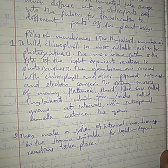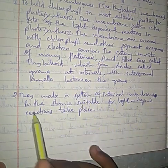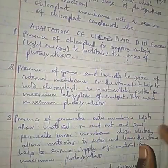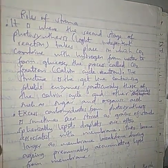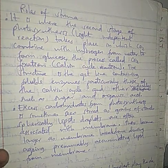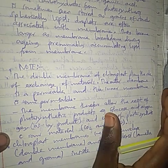Thylakoid membranes are involved in the light reaction of photosynthesis. The stroma contains enzymes for the dark reaction — that is the Calvin cycle, or for C4 plants, the Hatch-Slack pathway. Excess carbohydrate is stored in the stroma. The double membrane of the chloroplast plays the role of exchanging materials — glucose, oxygen, carbohydrate, water — between the outer and inner parts of the chloroplast.